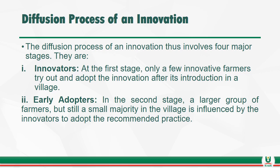The diffusion process of an innovation involves four stages — though in some cases five stages are identified, where the early adopters stage is split into two. The first stage is the innovators: these are people who are the initiators of change. At this stage, only a few innovative farmers strike out and adopt the innovation after its introduction in a village setting. The second stage is the early adopters: a larger number of farmers, though still a small minority, are influenced by the innovators to adopt.